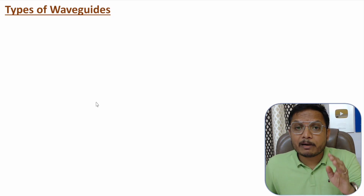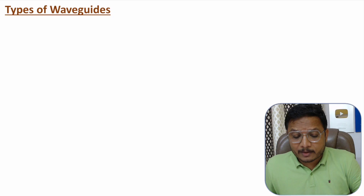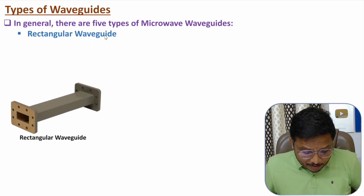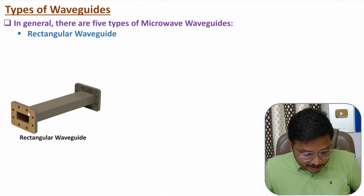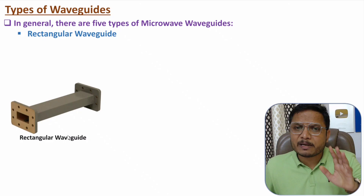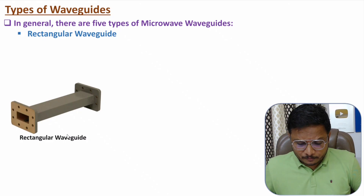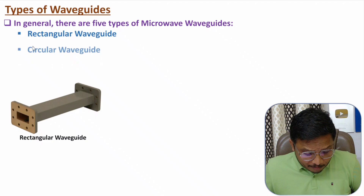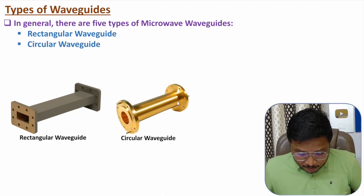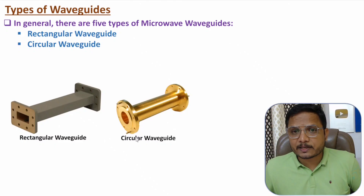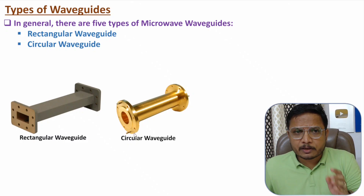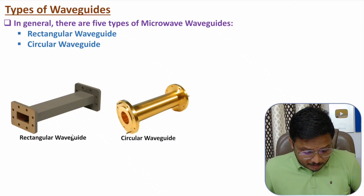In general there are five different types of waveguides, though in most applications we use rectangular waveguides. The first type is the rectangular waveguide — a hollow metallic tube with a rectangular cross-section, widely used in many applications. The second type is the circular waveguide — a hollow metallic tube with a circular cross-section, also widely used, though in the majority of applications rectangular waveguides are preferred.